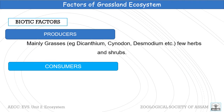The producers mainly comprise grasses of different species such as Dichanthium, Cynodon, Desmodium, etc., along with herbs and shrubs.